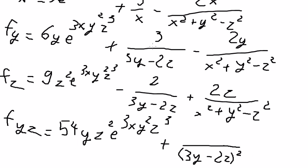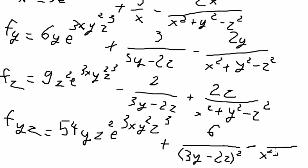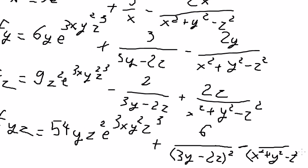We have negative 2z here, and number 3 multiplied with number 2 gives us number 6. The next term has negative z squared, and because we have a negative from the denominator and another negative from the question, we keep a negative here. This term to the power of 2 gives 2y times 2z, so you get 4zy.